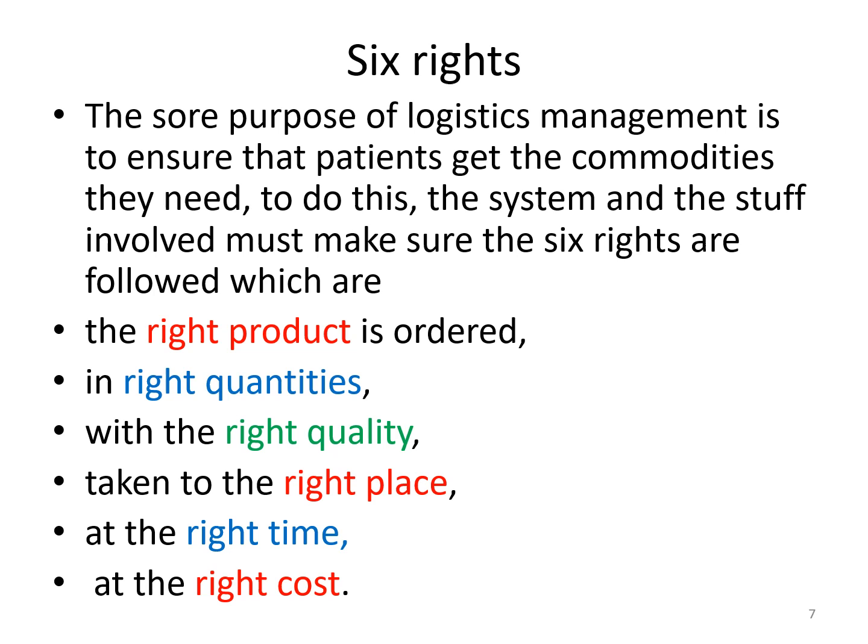Right quality: you need to get the right quality of the product. Is the product you are going to get the right one in terms of quality? For example, if you are given money and you go to buy panadols just because they are cheap, you might find the quality is compromised and that will affect the patients. Right place: procure your products from the right place. Right place can mean either buying at the right place or taking the product to the right place in the logistics system.